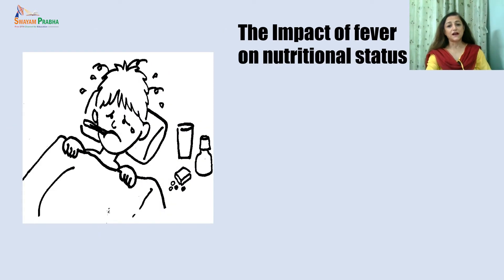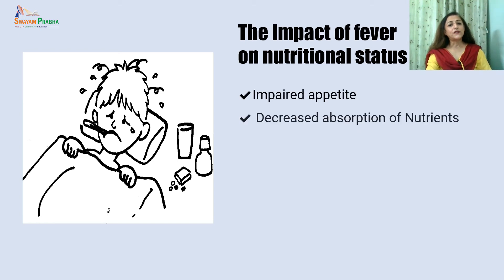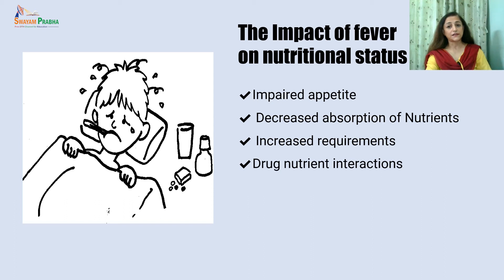Due to infection there will be decreased levels of micronutrients, and increased interleukins hamper the appetite. There will be vomiting, abdominal pains, gastrointestinal disorders, sore throat or mouth — such as in HIV cases — and there could be depression or mental tension which will lower the appetite. The body is also not able to absorb nutrients efficiently. Reduced intake coupled with increased requirements, and drug interactions with nutrients, further affect normal mechanisms.